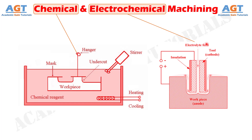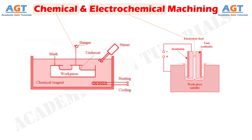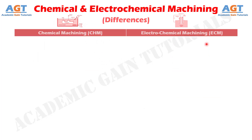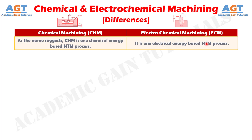So, let's look into the basic differences between chemical and electrochemical machining in a tabular form. Difference No. 1: Chemical machining is one chemical energy-based non-traditional machining process, whereas electrochemical machining is one electrical energy-based non-traditional machining process.